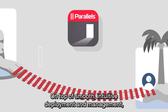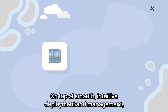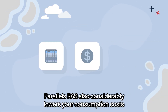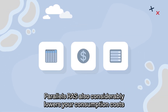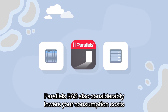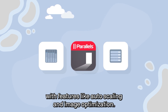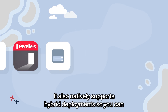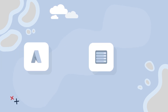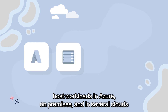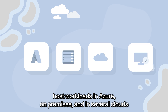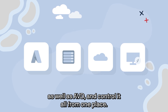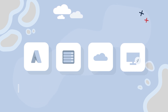On top of smooth, intuitive deployment and management, Parallels RAS also considerably lowers Azure consumption costs with features like auto-scaling and image optimization. It also natively supports hybrid deployments so you can host workloads in Azure, on-premises and in several clouds, as well as AVD, and control it all from one place.